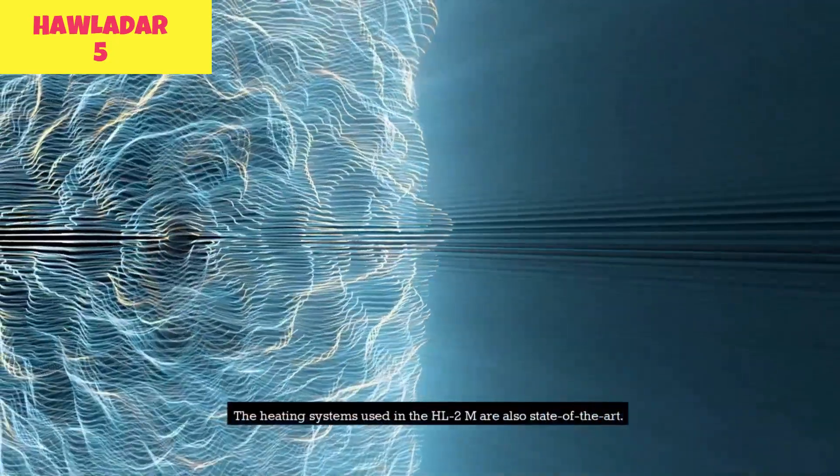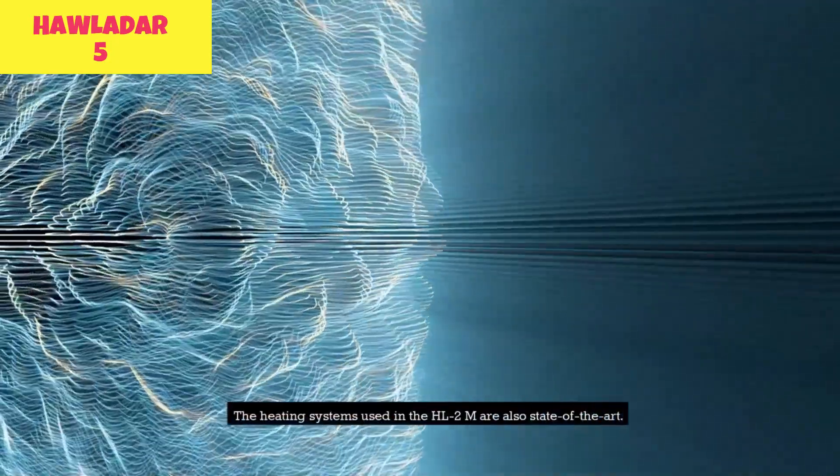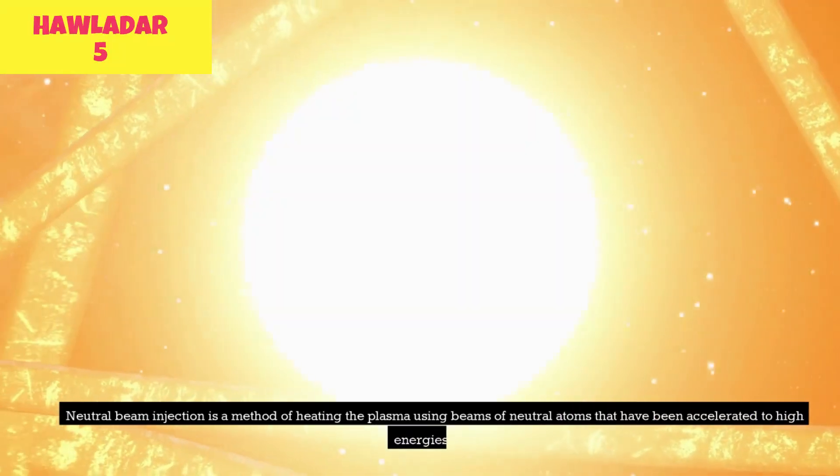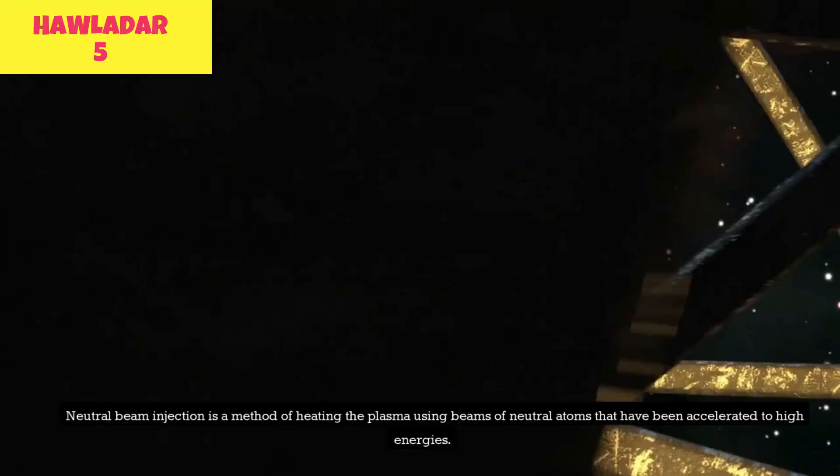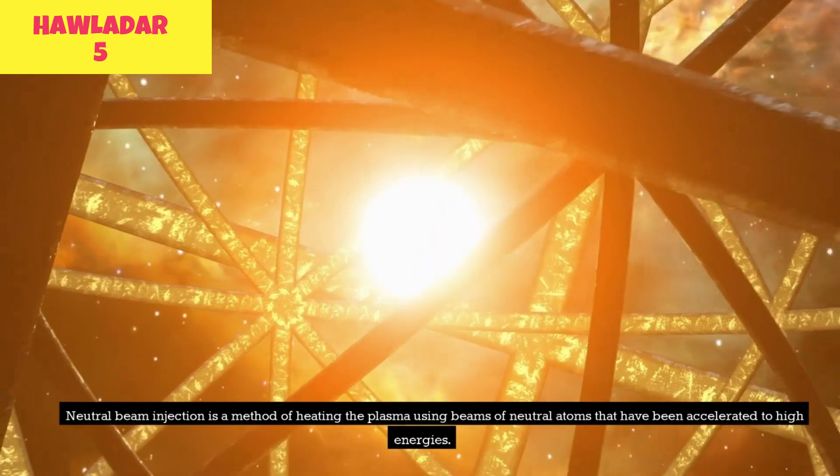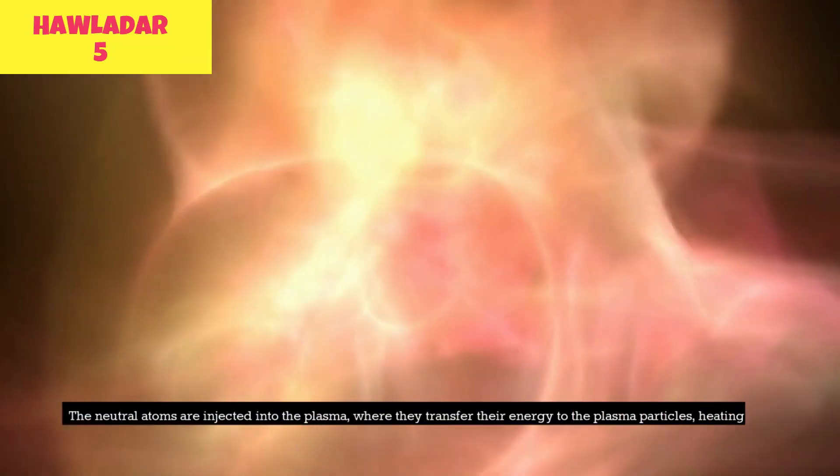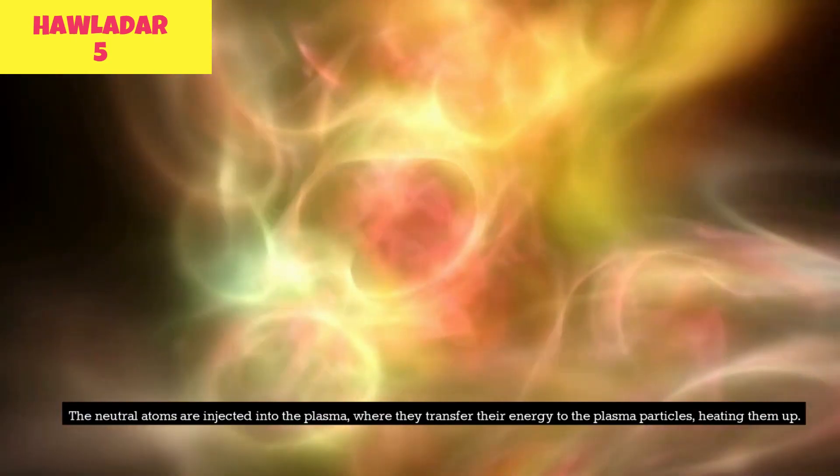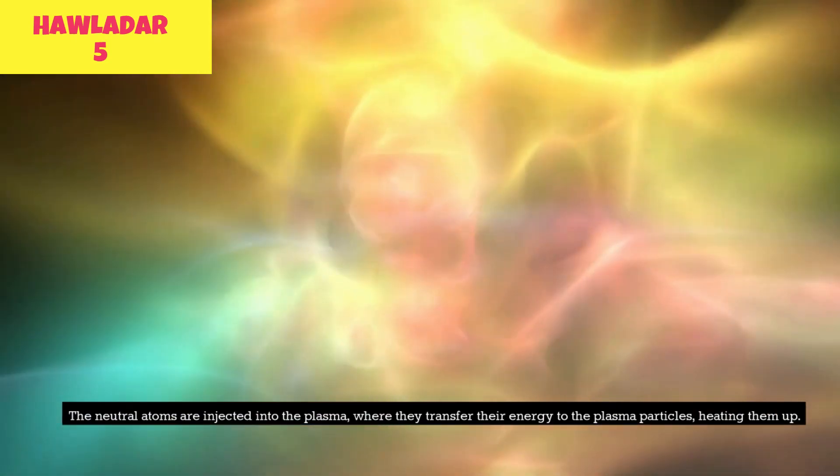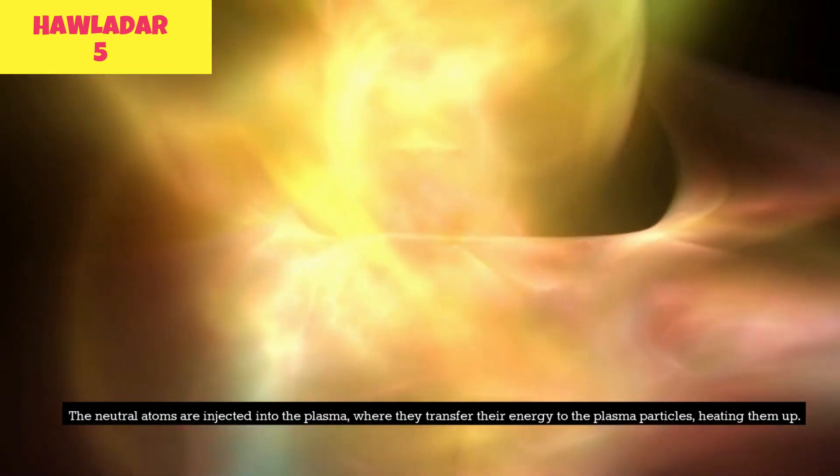The heating systems used in the HL2M are also state-of-the-art. Neutral beam injection is a method of heating the plasma using beams of neutral atoms that have been accelerated to high energies. The neutral atoms are injected into the plasma, where they transfer their energy to the plasma particles, heating them up.